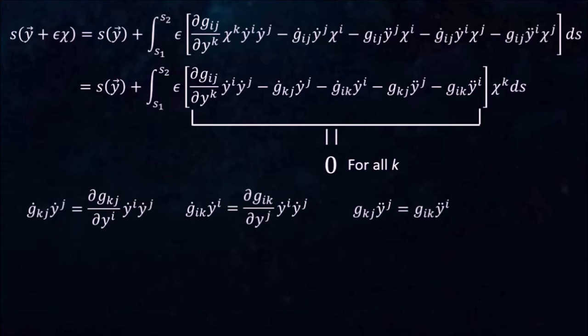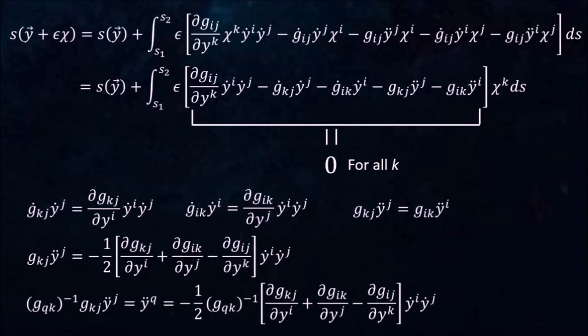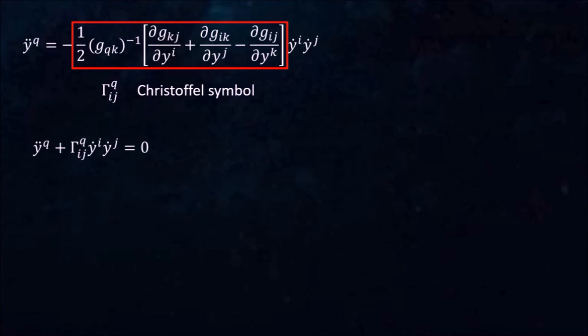Recognizing these identities, we can cast this condition into a nicer form. Multiplying both sides by the inverse metric G^QK inverse and summing over K liberates the second derivative term on the left-hand side, and we end up with this equation. We recognize this part as the Christoffel symbol and may write the equation in a more compact form. We can simplify it further by defining a new function u as the derivative of x with respect to s. Finally, we end up with a first-order nonlinear differential equation for every component Q.